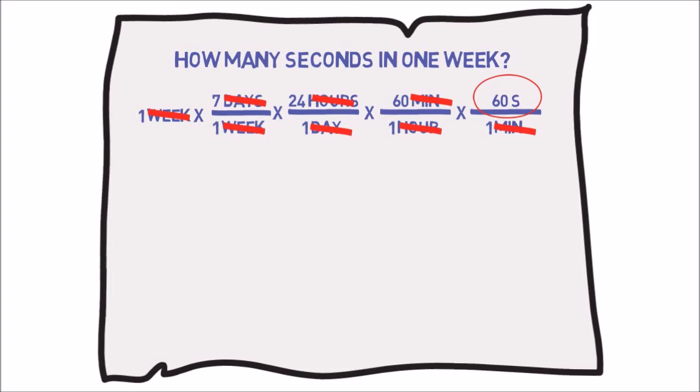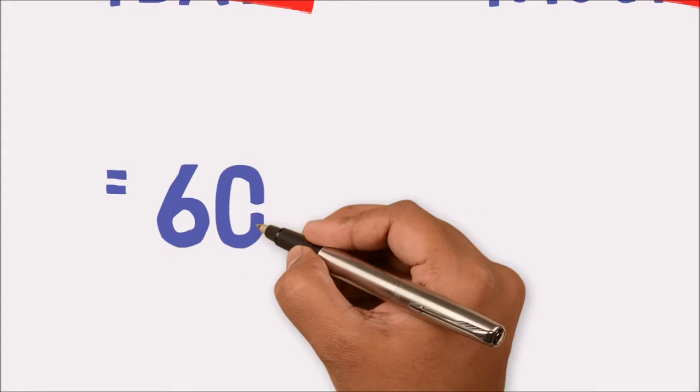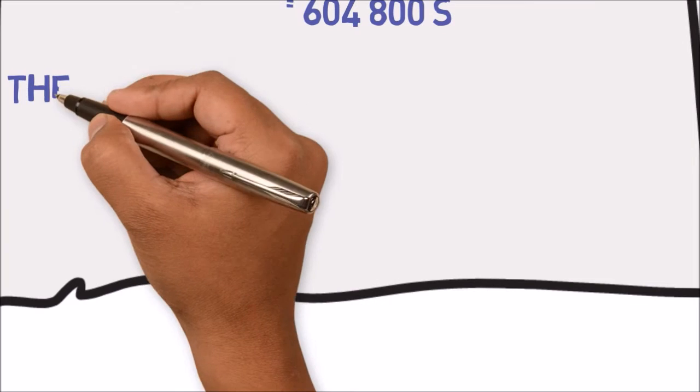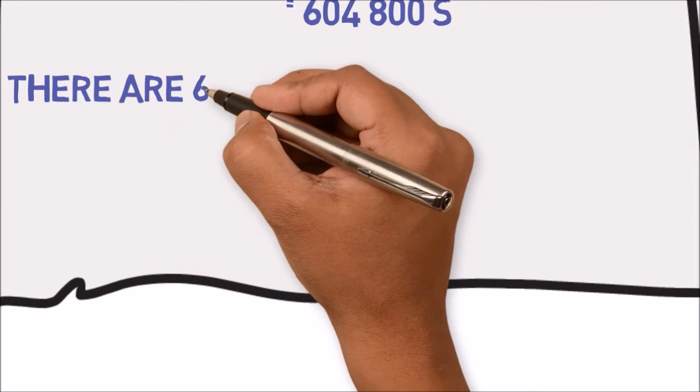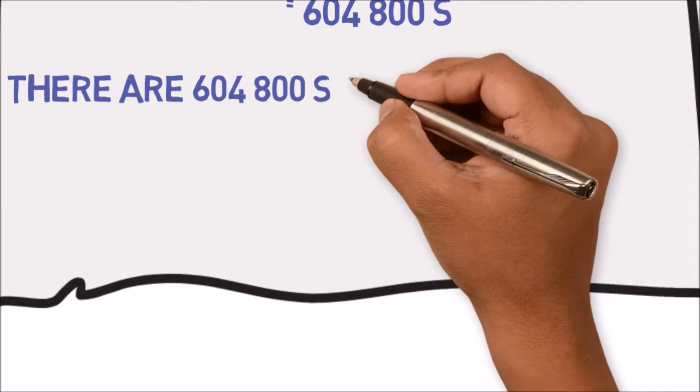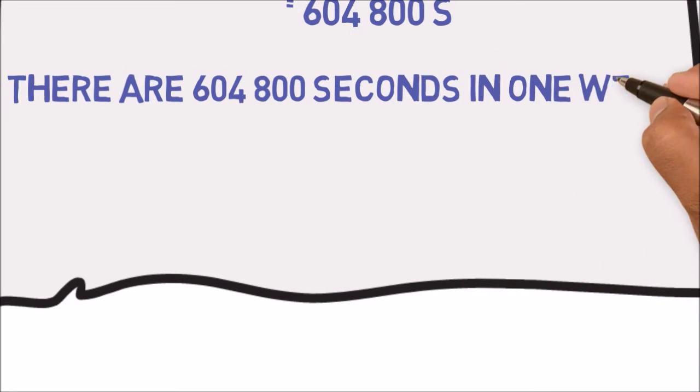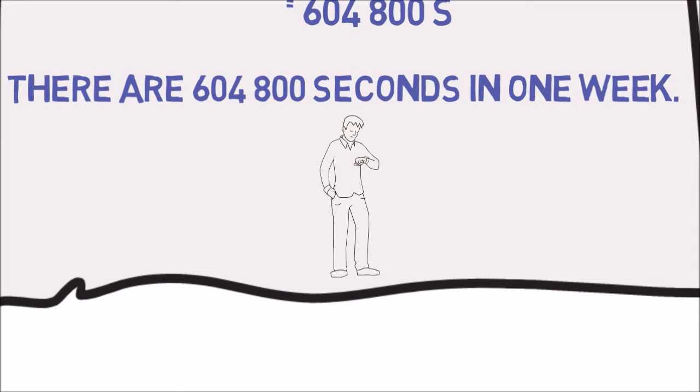In our problem, all of the units cancel out except seconds. Since seconds is our desired answer, we have set the problem up correctly and can continue with our calculation. There are 604,800 seconds in one week. Seconds per week is a straightforward conversion. Let's look at a different question.